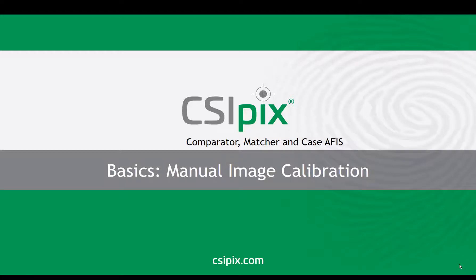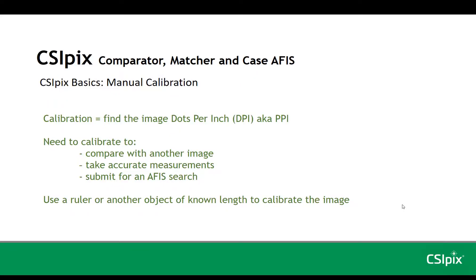In this video, I'm going to show you how to manually calibrate an image in CSI PICS. When I say calibration, I mean to find the image's dots per inch, or DPI. It's also known as PPI — pixels per inch.